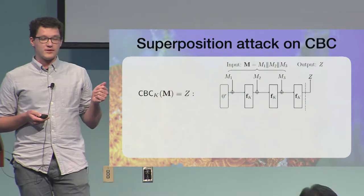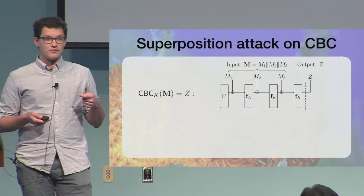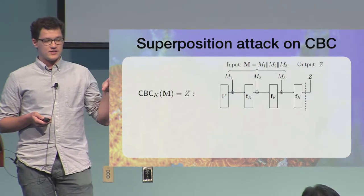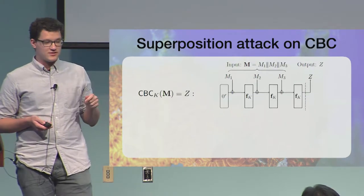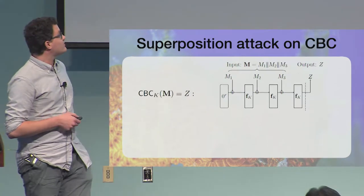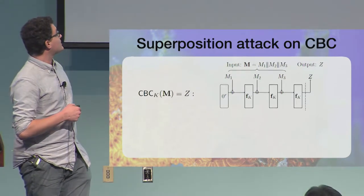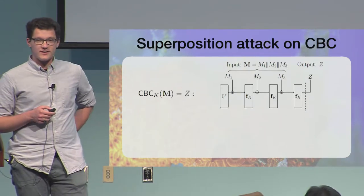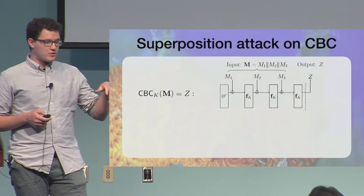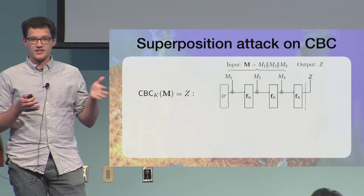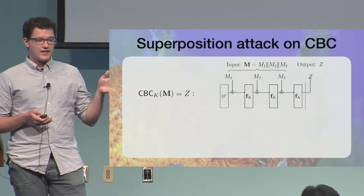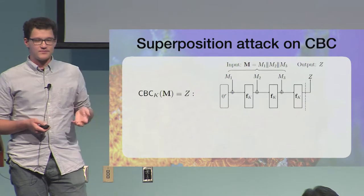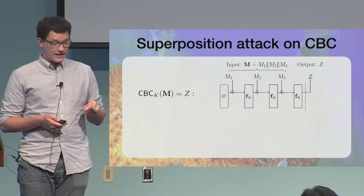So first I will talk about the attack and somehow give you the gist of it. It attacks, among other things, the CBC construction. So here it is. We have the CBC, it takes the internal function FK. And how do you evaluate it? You take the message, divide it into arbitrary blocks, and then XOR to the internal state, and apply F and repeat until the whole message is analyzed.